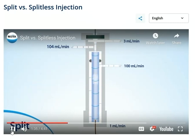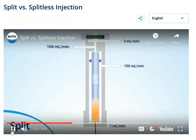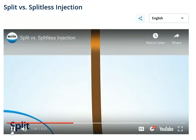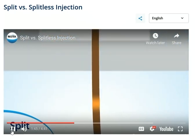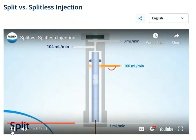During injection, the sample is injected into the liner and vaporizes. Since our example has a high split ratio of 100 to 1, one part goes onto the column while 100 parts of the sample exit out the split vent.